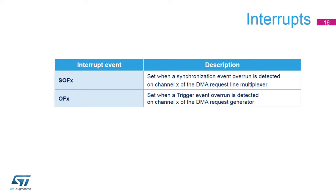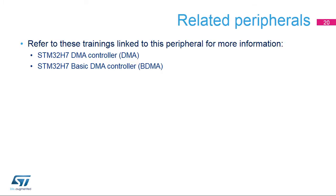An interrupt can be generated for a synchronization event overrun in each DMA request line multiplexer channel, or a trigger event overrun in each DMA request generator channel. In both cases, per-channel individual interrupt enable bits are available. Please refer to the related trainings for more information: STM32H7 DMA controller and STM32H7 basic DMA controller, or BDMA.